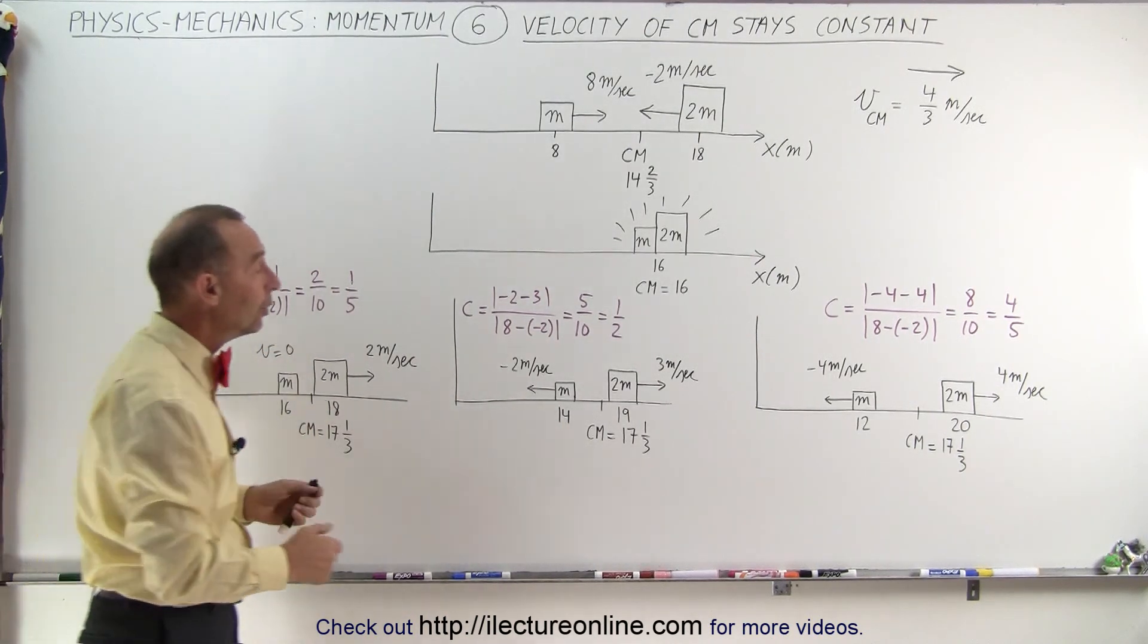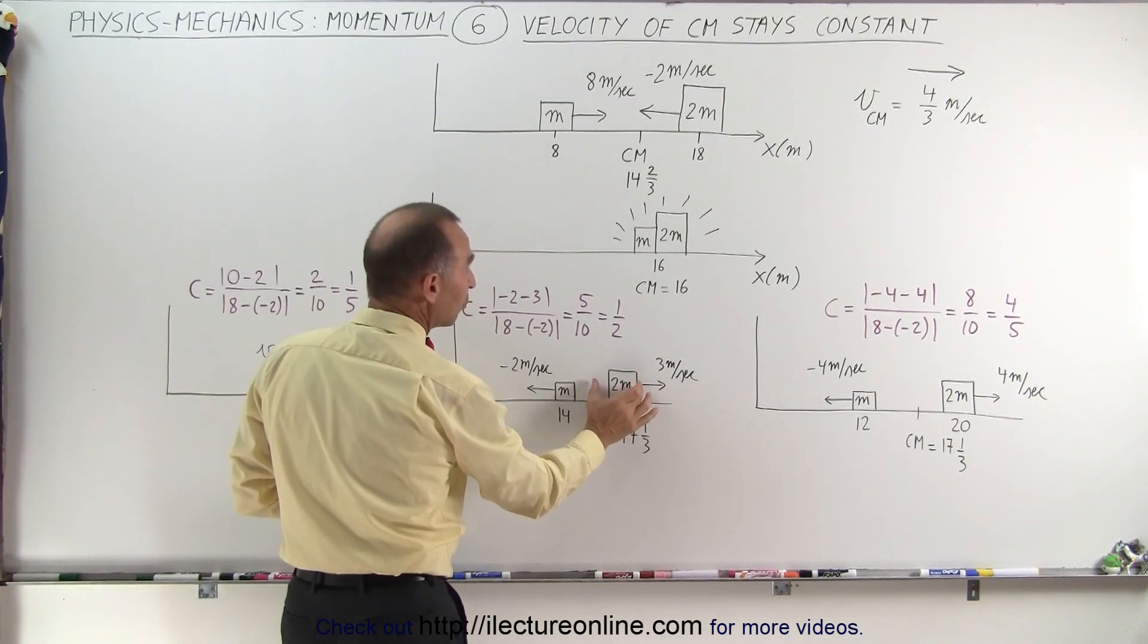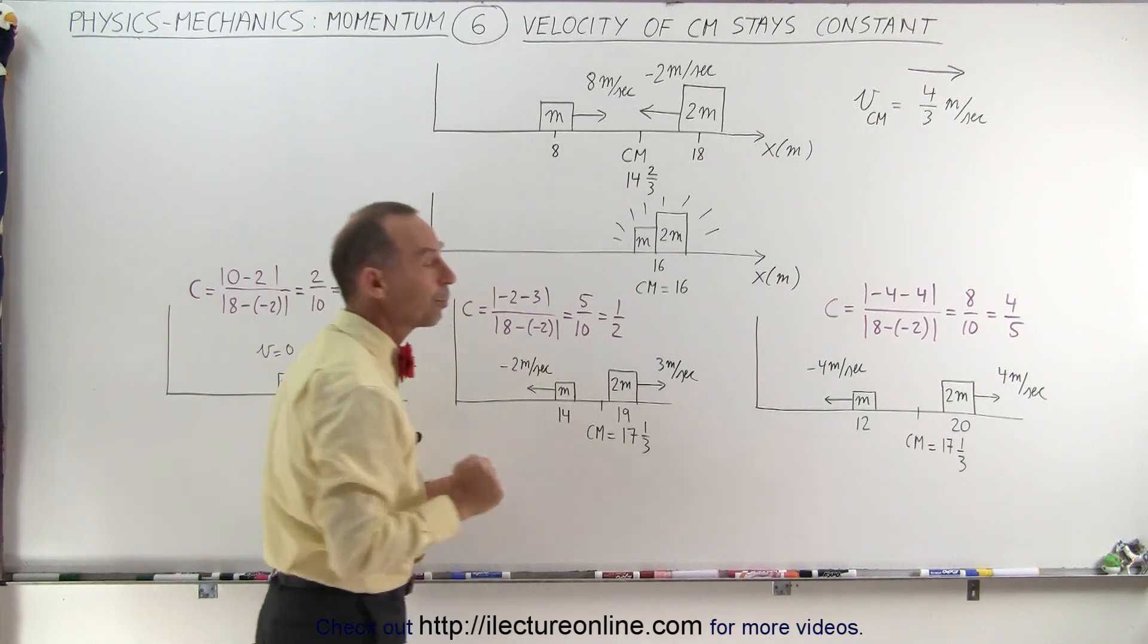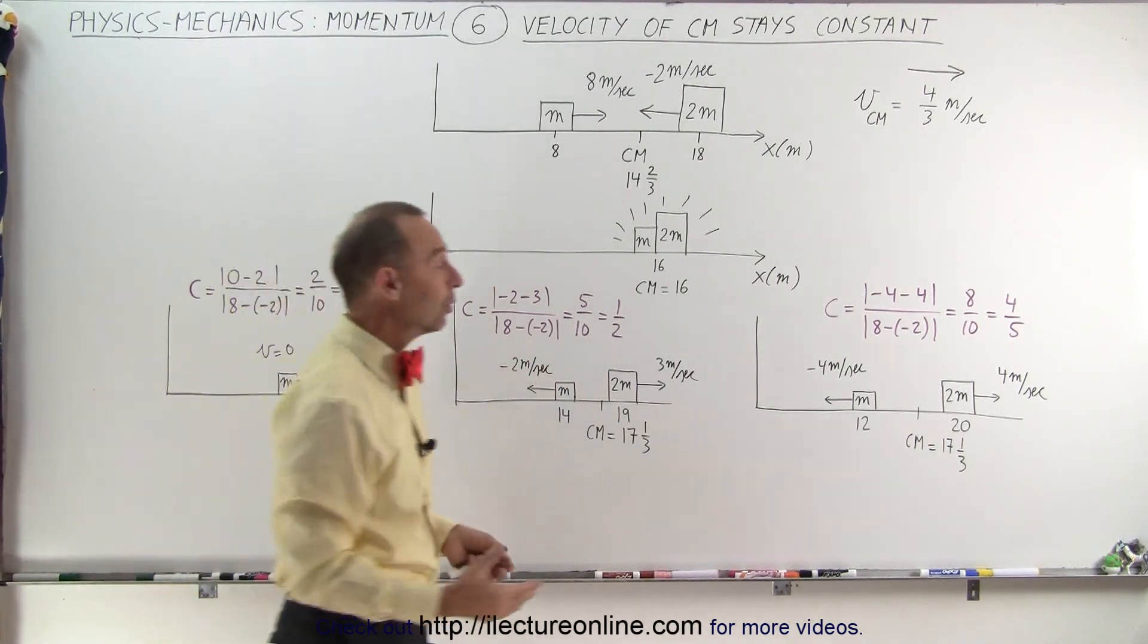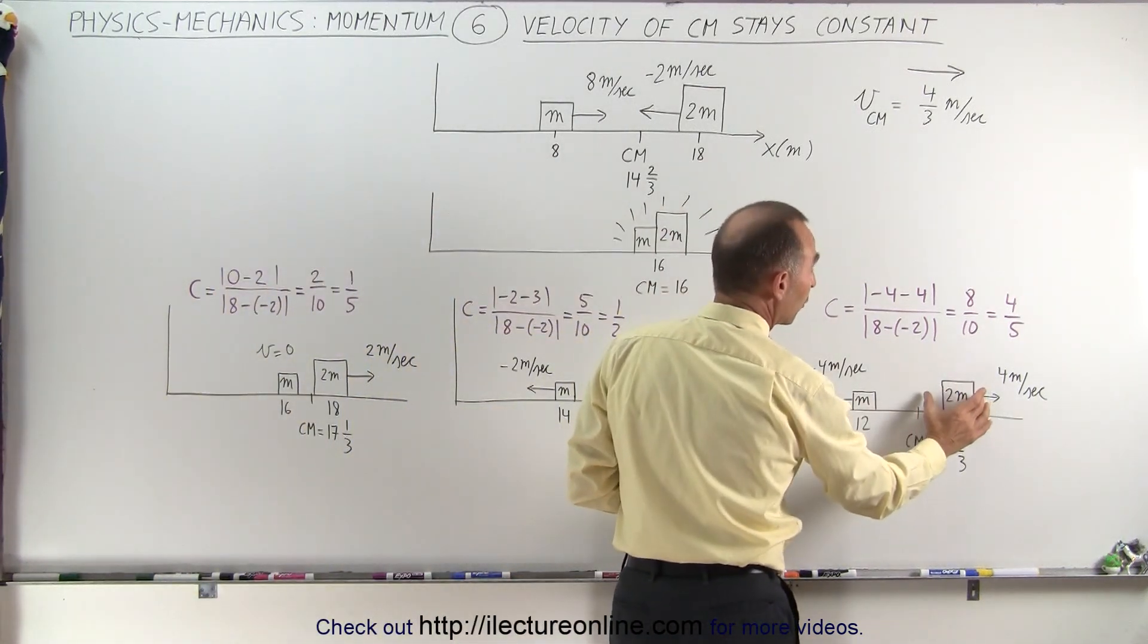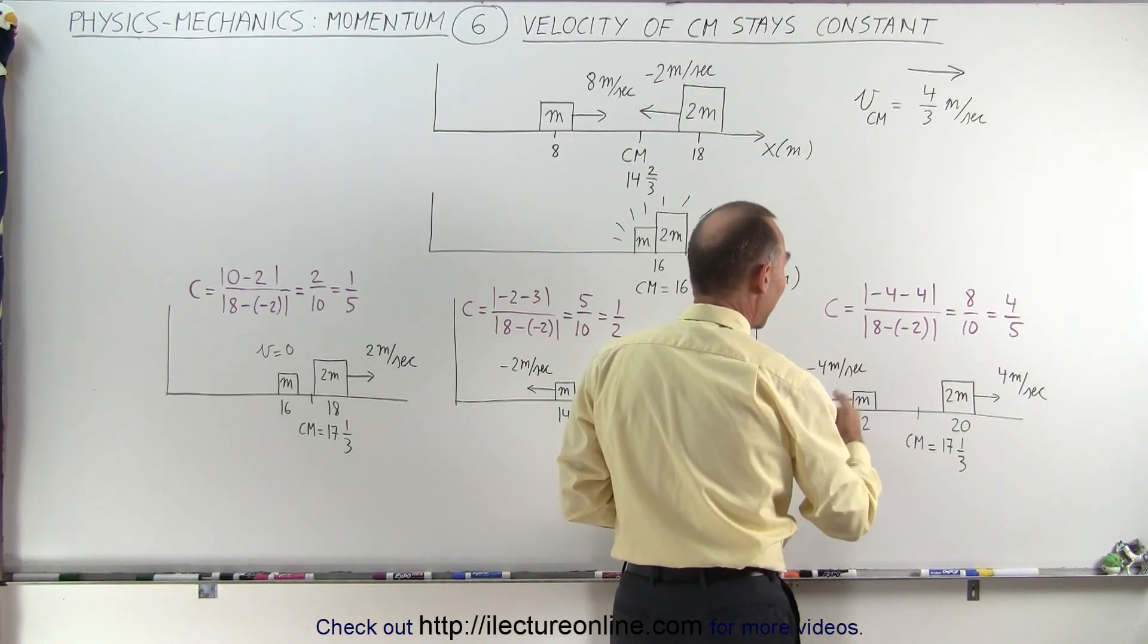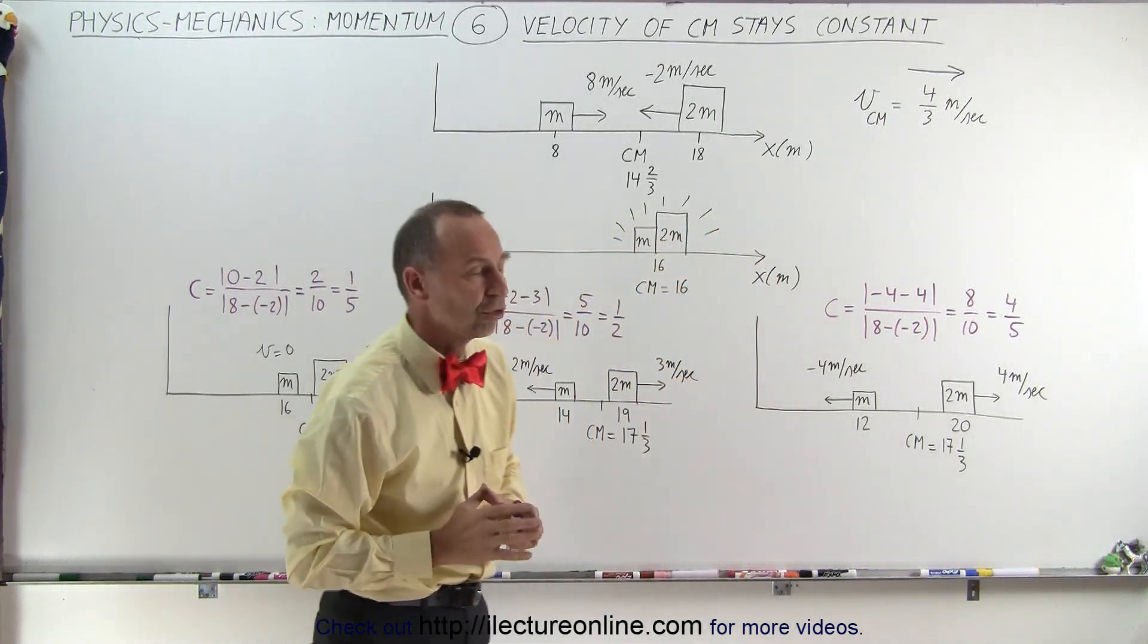A second scenario is where we have the large mass moving to the right at 3 meters per second, and the small mass moving to the left at minus 2 meters per second. The third scenario is where we have the large mass moving to the right at 4 meters per second, and the small mass moving to the left at 4 meters per second, all after the collision.